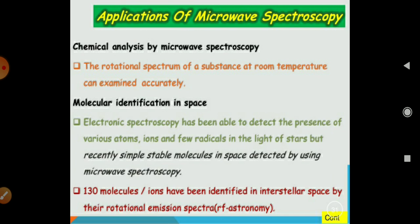But recently the simple, stable molecules in space detected by using microwave spectroscopy. So, 130 molecules or ions have been identified in the interstellar space by their rotational emission spectroscopy.